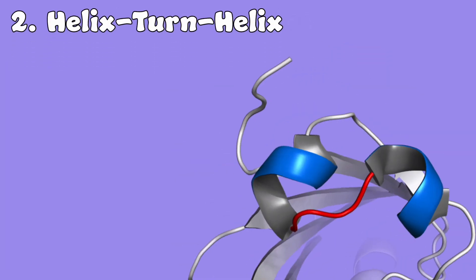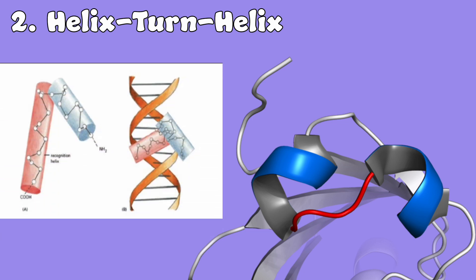Next, helix-turn-helix. These are helices on the bottom that penetrate the major groove. This motif is characterized by two alpha helices connected by a short sequence of amino acids, which is the turn. The second helix, also known as the recognition helix, fits into the major groove of the DNA and makes sequence-specific contacts, allowing the protein to recognize and bind to a specific DNA sequence. These sequences are recognized by non-covalent interactions, including hydrogen bonds and van der Waals contacts between the recognition helix and specific chemical groups in the sequence of these base pairs.